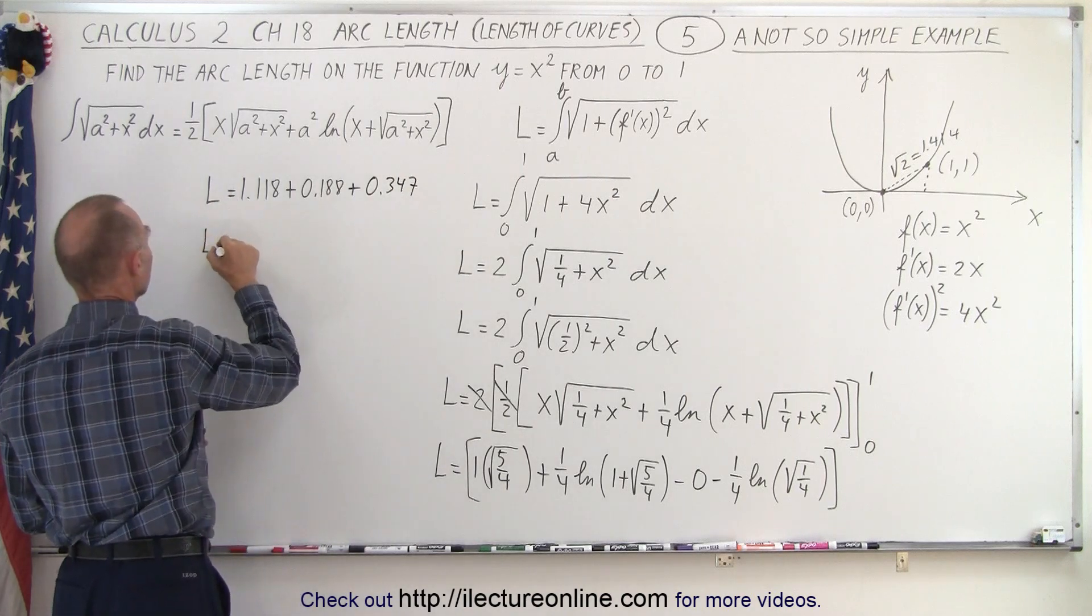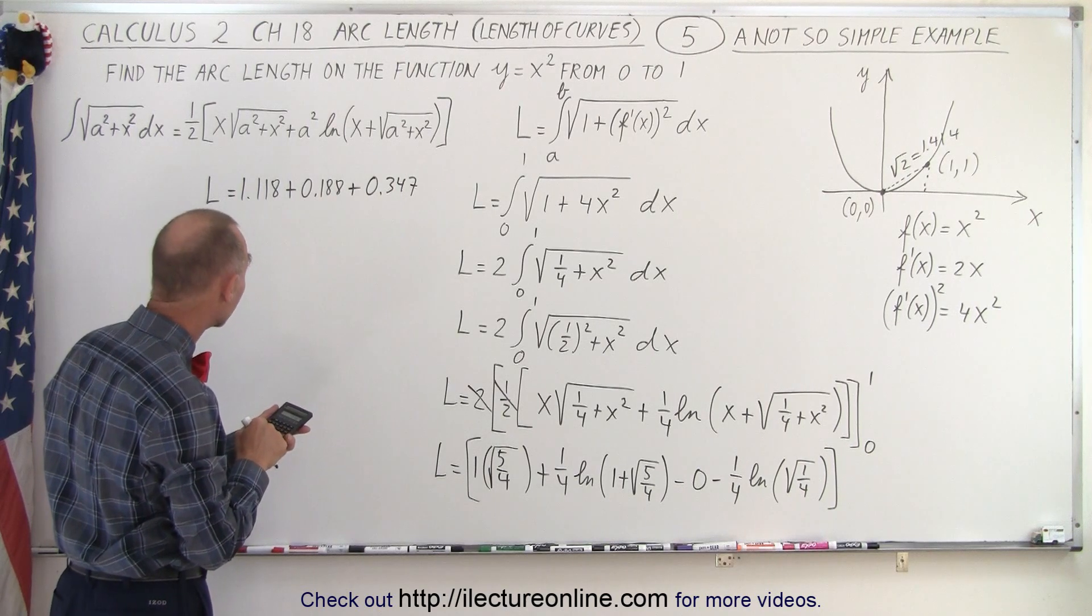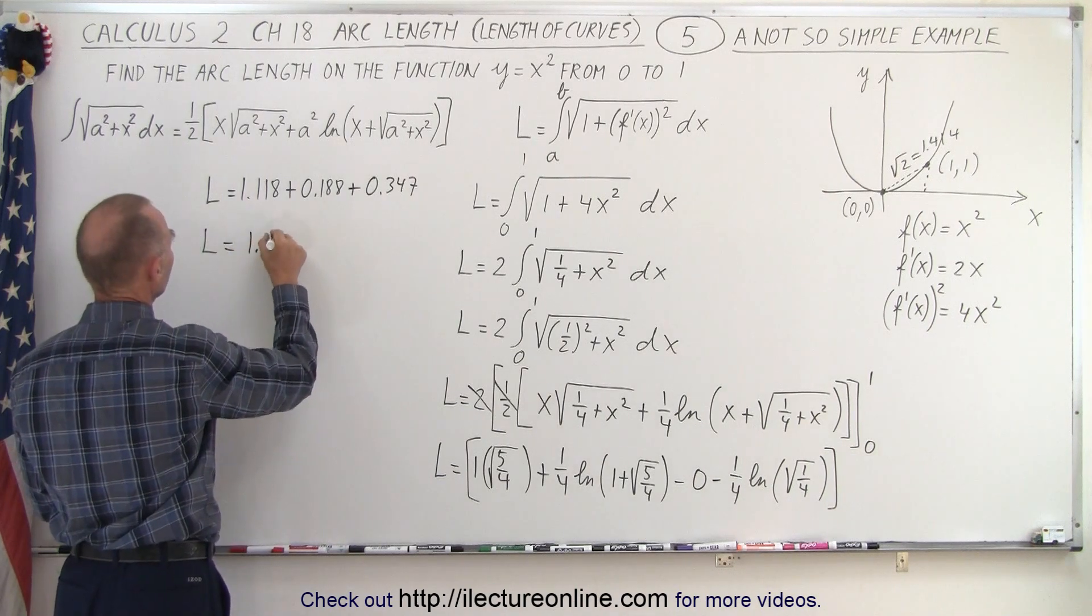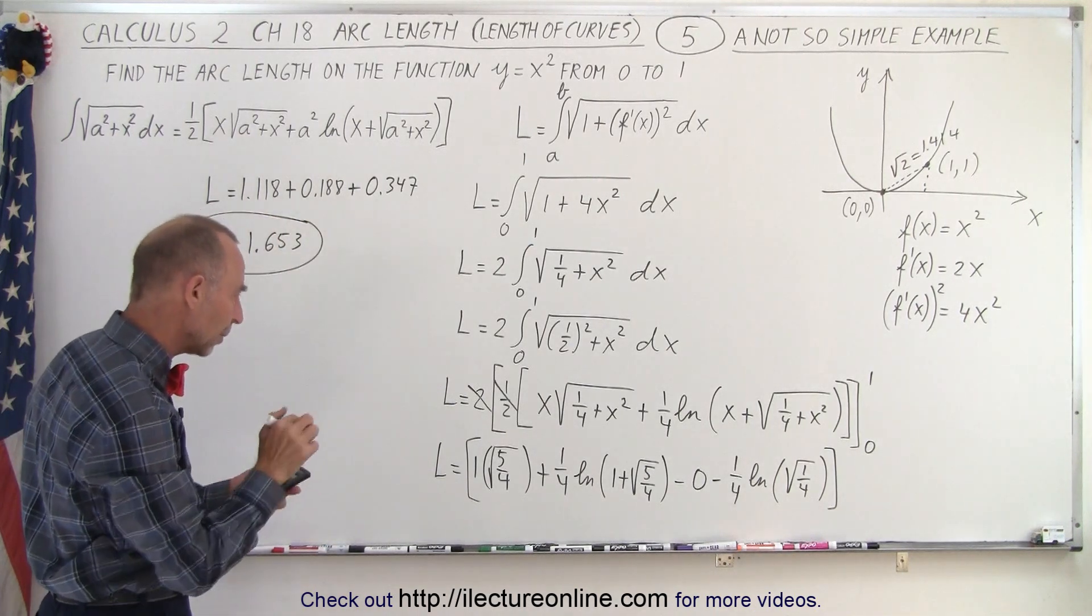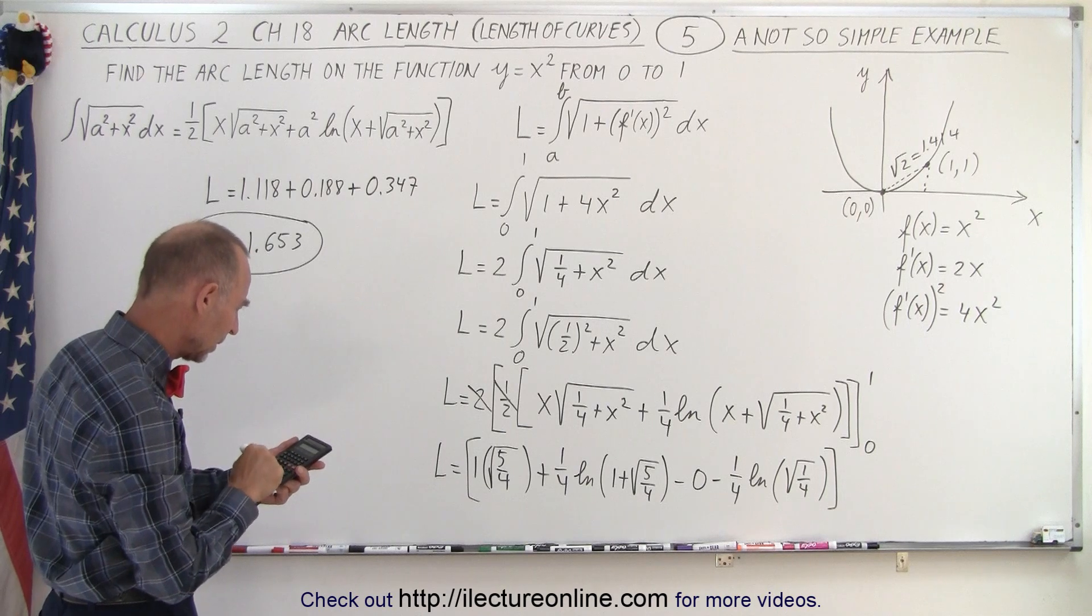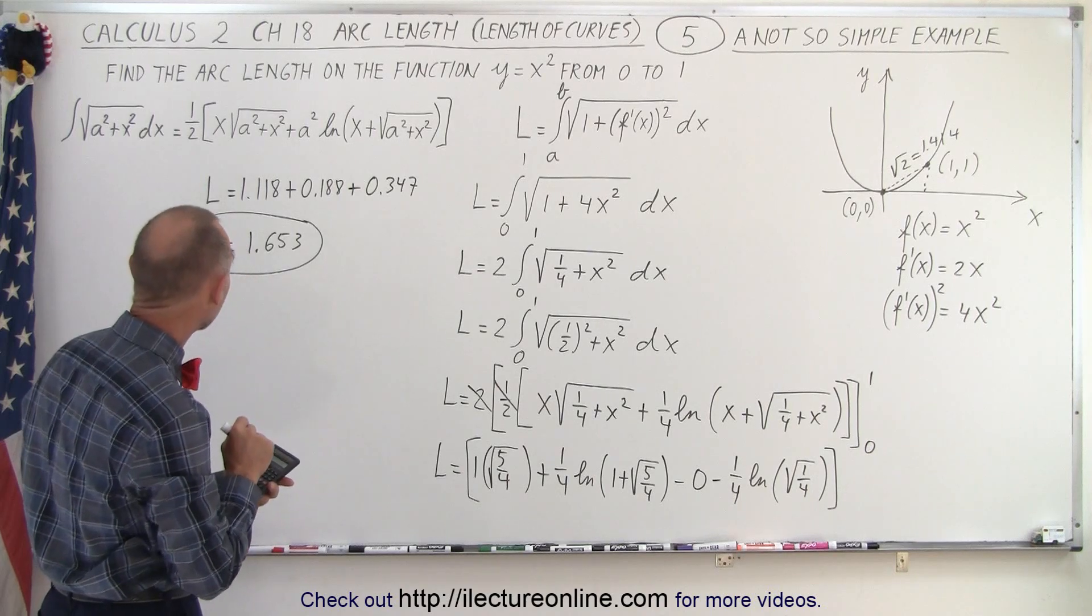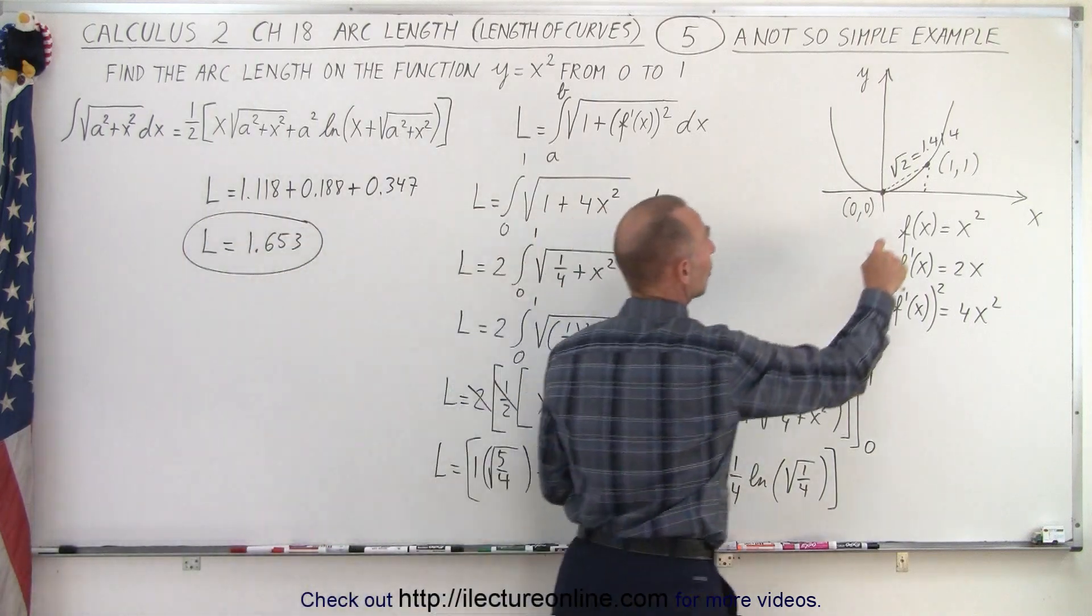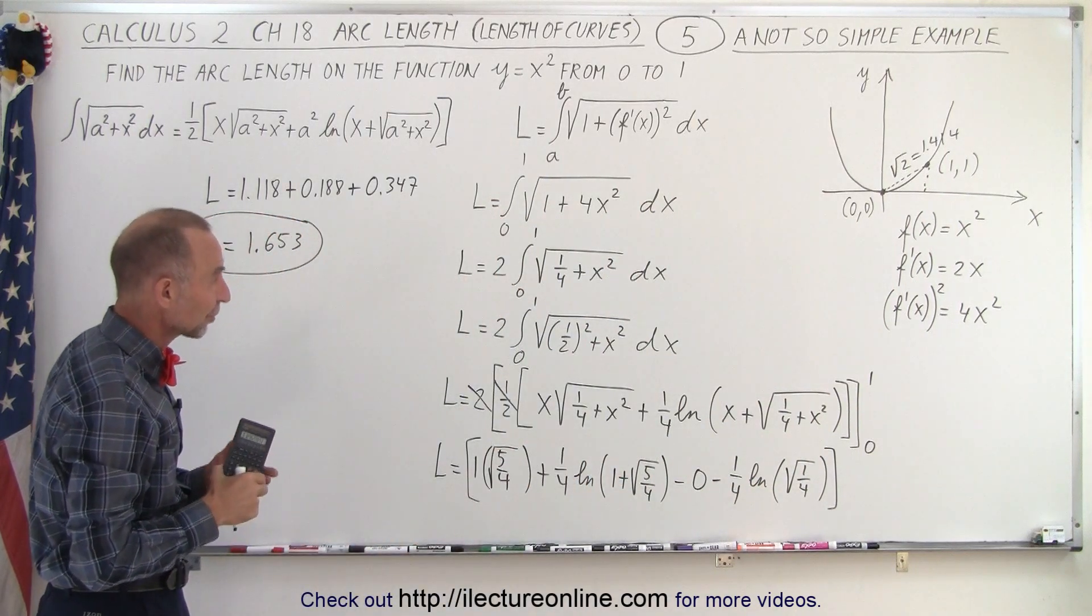And then we add them all up together. The arc length is equal to 1.118 plus 0.188 plus 0.347, and I get 1.653. Let me try one more thing here. So we have 1.25, take the square root of that, plus 1, take the natural log, and divide by 4. I just want to make sure I got that right. So close enough, 1.653. And notice we were looking for a number between 1.414 and 2.